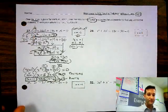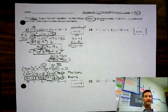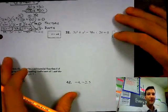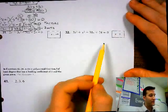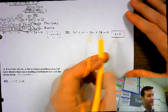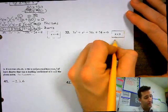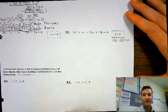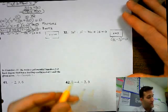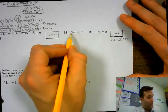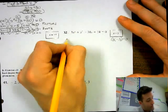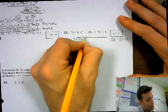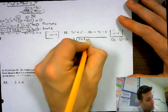So next we'll work on number 32. Number 32 gives you a solution of x equals 3. To make it into a factor, it will be x minus 3 equals 0. So you want to divide your factor by your polynomial: x minus 3 divided by 3x cubed plus x squared minus 38x plus 24.